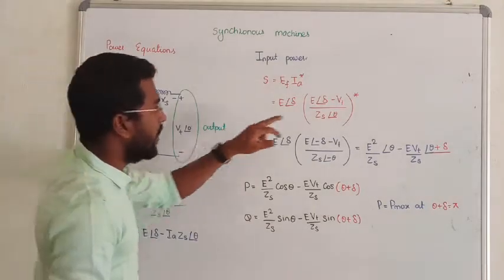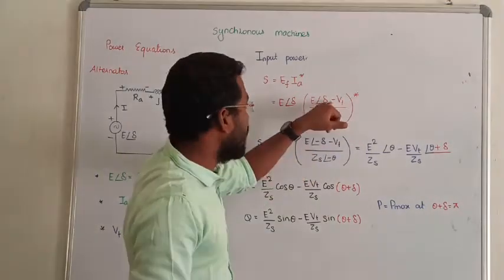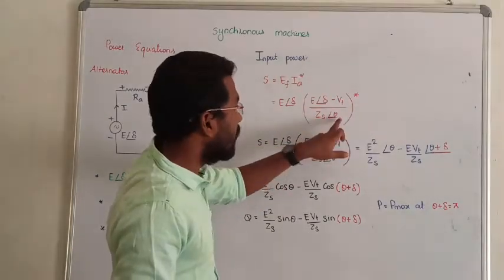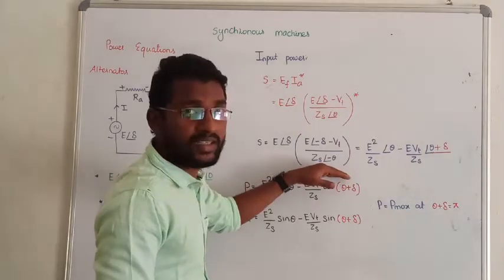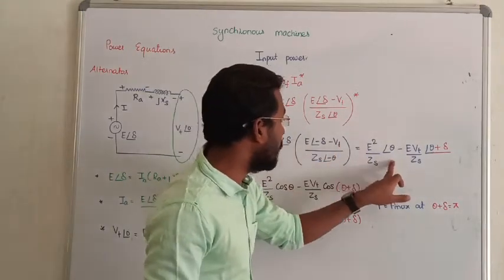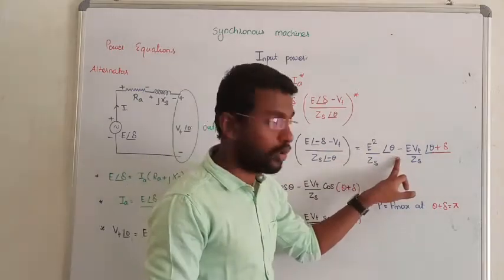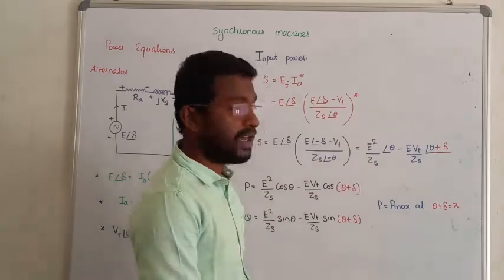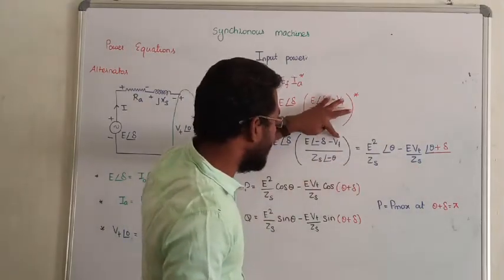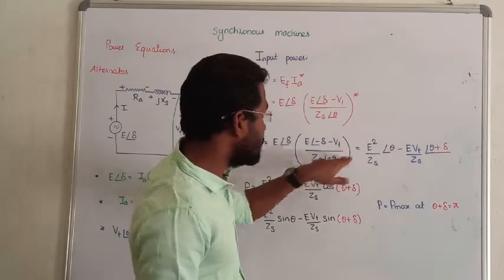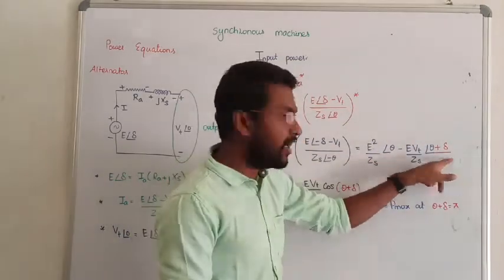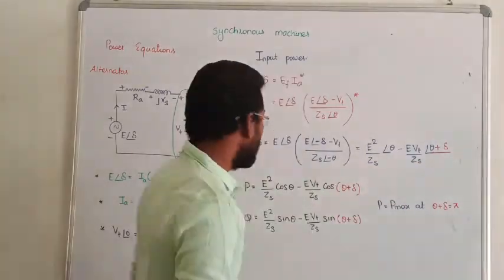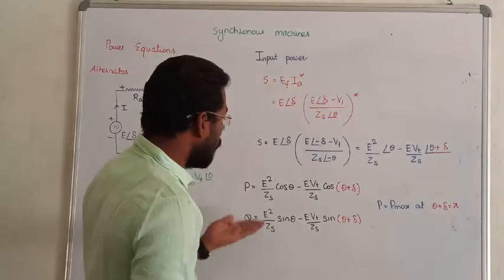Now you know the current equation. While taking the conjugate, the sign of the angle will change — plus delta becomes minus delta, and minus theta becomes minus theta. Then, minus delta plus delta equals zero, and from the minus theta term you will get E squared upon Zs at angle theta. The second term becomes Vt upon Zs at angle minus theta, and there is one more delta in polar coordinates — phase is not added to magnitude but multiplied. This gives us the apparent power expression.